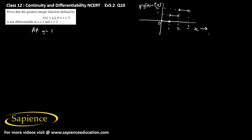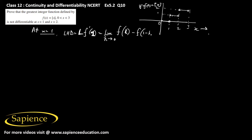At x = 1, we have to prove that the function is not differentiable. The left hand derivative at x = 1 is given as l f'(1), which equals the limit as h tends to 0 of f(1) minus f(1 minus h), all divided by h.